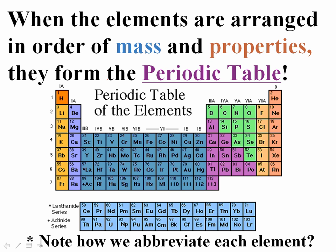So broken down, we can see that when the elements are arranged in order of mass, the periodic table forms. So we're basically organizing them by their mass. And please remember, each element does have an abbreviation. It's got its symbol.